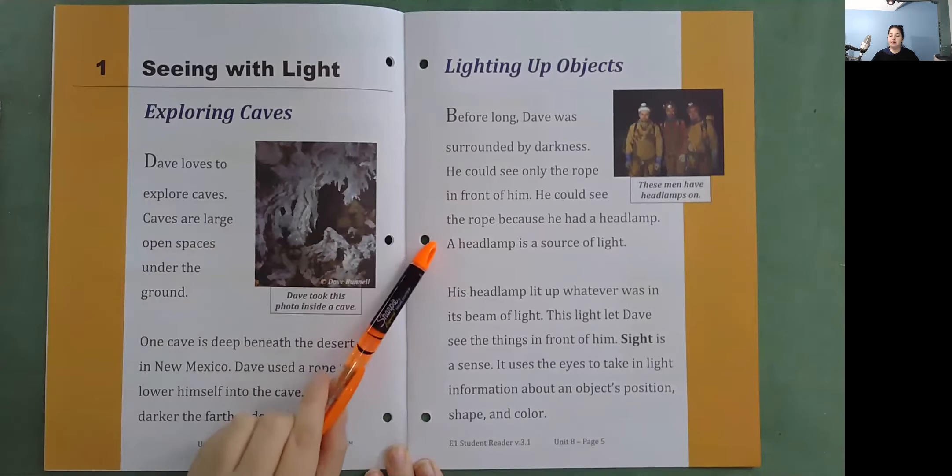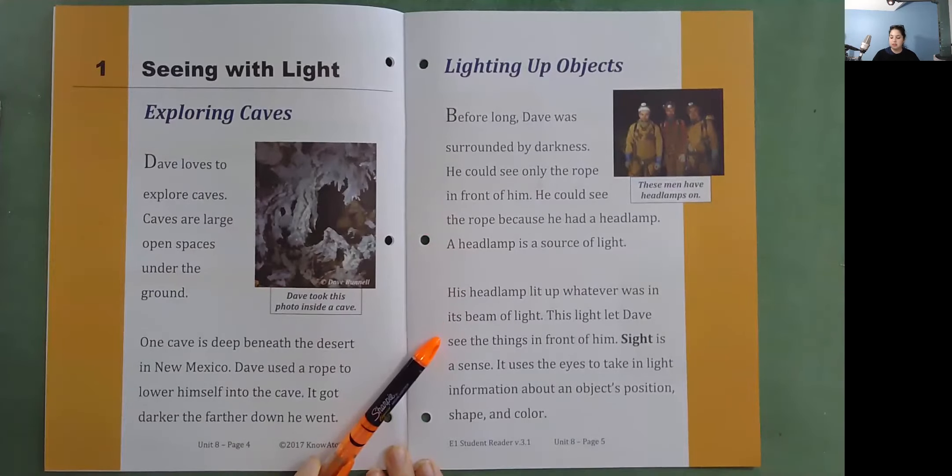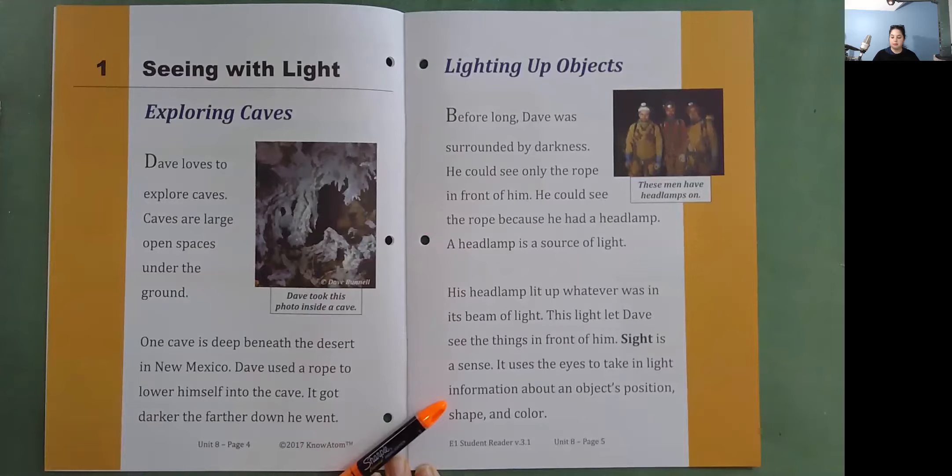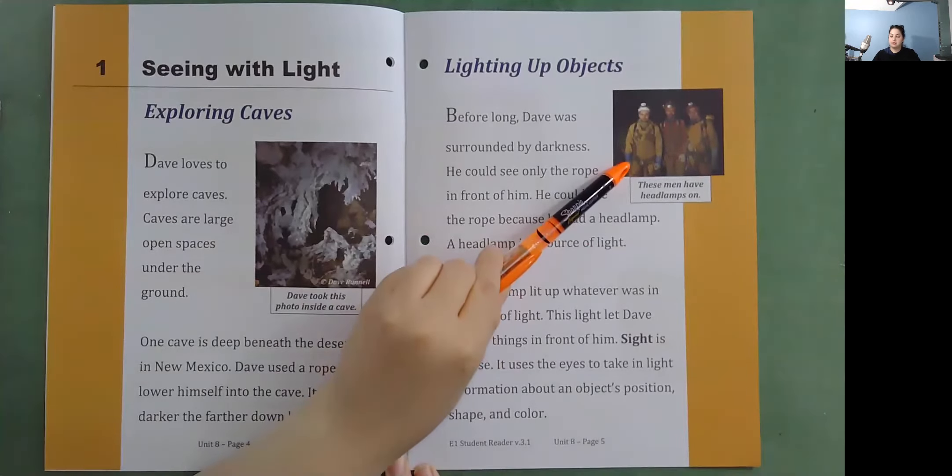A headlamp is a source of light. His headlamp lit up whatever was in its beam of light. This light let Dave see the things in front of him. Sight is a sense. It uses the eyes to take in light information about an object's position, shape, and color. These men have headlamps on.